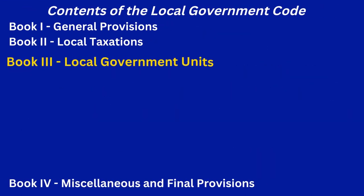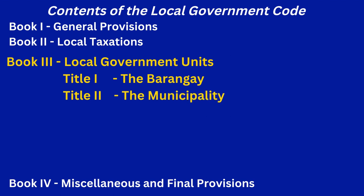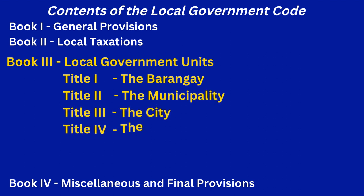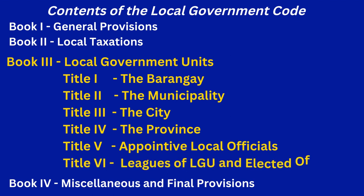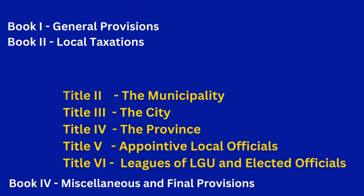The contents of the Local Government Code are as follows: Book 1, General Provisions; Book 2, Local Tax Sessions; Book 3, Local Government Units; and Book 4, Miscellaneous and Final Provisions. The focus of our lesson will be on Book 3 — the Local Government Units — covering the Barangay, the Municipality, the City, the Province, the Appointive Local Officials, and the Leagues of Local Government Units and Elected Officials.